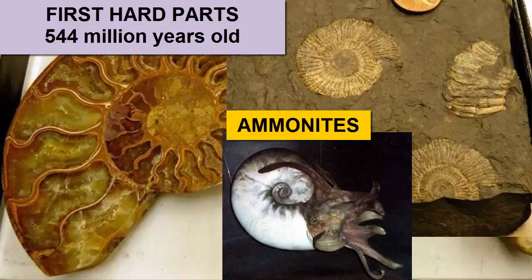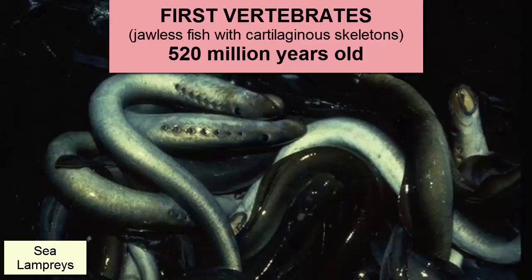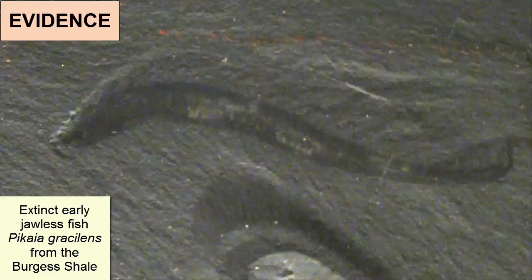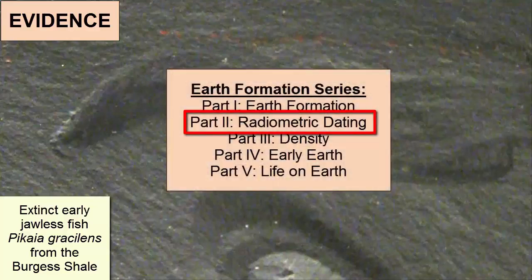Imagine a giant octopus-like organism living in an ornate hard shell and floating at various depths within the water column. The first vertebrates, jawless fish with cartilaginous skeletons, evolved about 520 million years ago. The evidence for this timeline comes from fossils we find in rocks that we date through radiometric dating. Watch the video tutorial on radiometric dating for more information on that process.